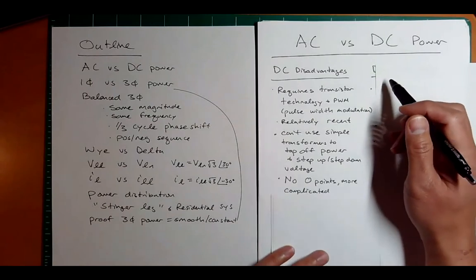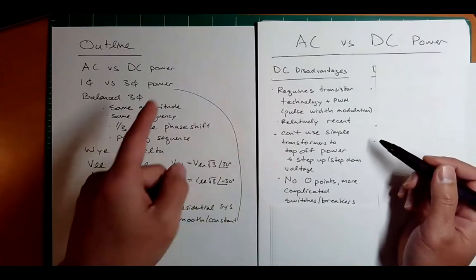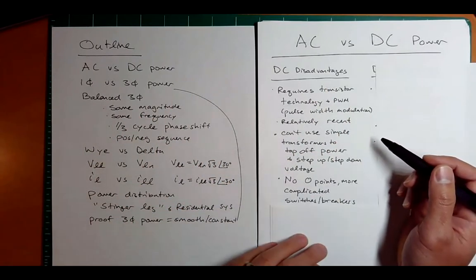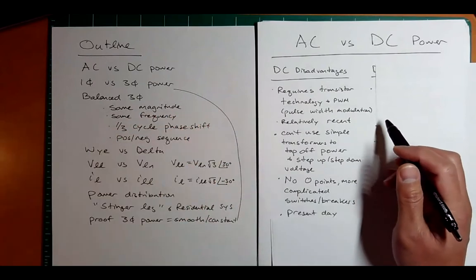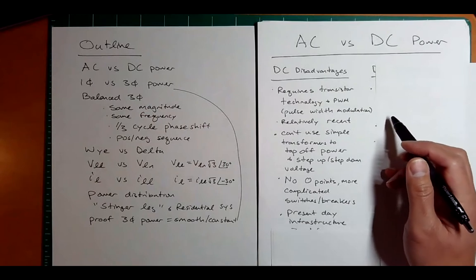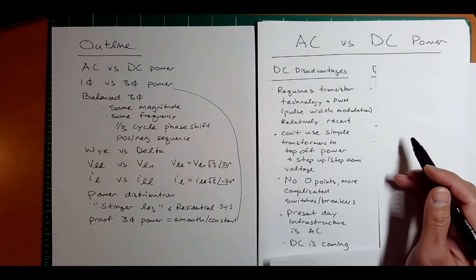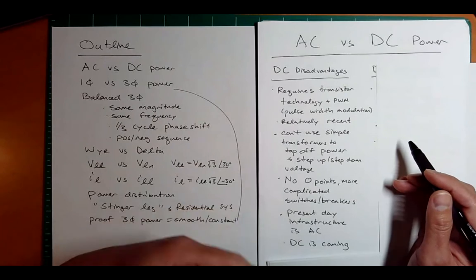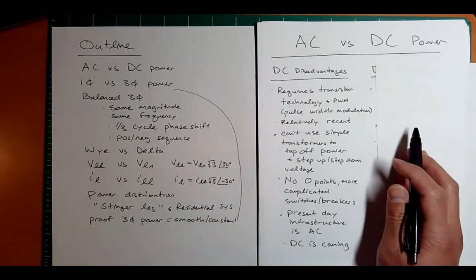DC has no zero crossing points, so you have more complicated switches and breakers. With AC, you have nice zero current points in time, which makes it easier for the breakers to switch on and off. Our present-day infrastructure is AC; however, DC is coming. We actually have the Pacific Intertie — so many examples now where DC transmission is definitely coming into play in our new grid.